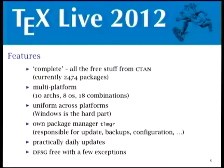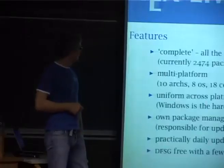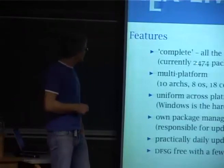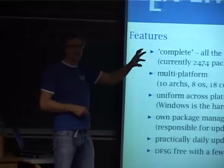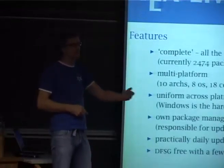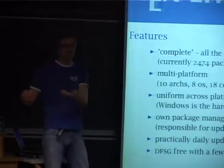What are the features of TeX Live? It aims to be complete — everything that is free according to FSF guidelines should be included. We want to have everything on CTAN. CTAN is the Comprehensive TeX Archive Network, similar to CPAN for Perl. We currently have 2,474 packages, where one package often consists of up to hundreds of files — one package from CTAN, a font set, macro package, or whatever.